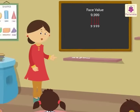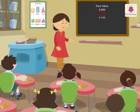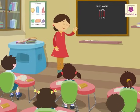Wasn't it easy to understand the place value and face value of a digit?